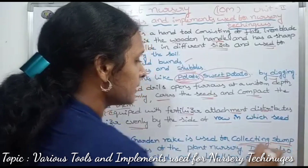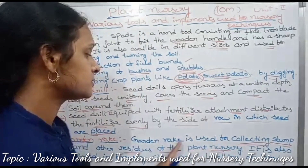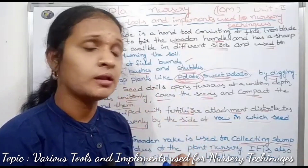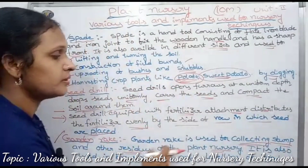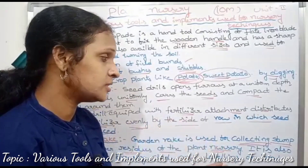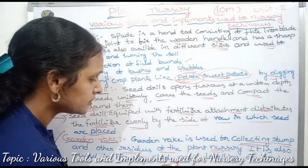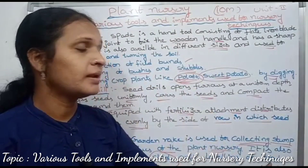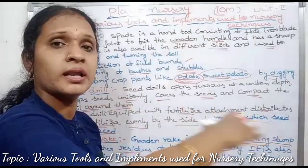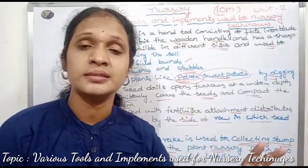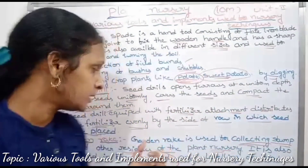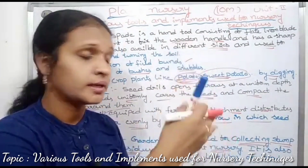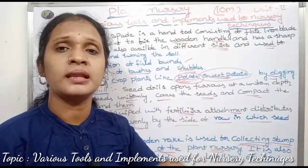The garden rake is used for collecting stumps and other residues from the plant nursery. It is also used for removing soil and breaking clods. The garden rake helps level the land and is used to separate soil from the ground.